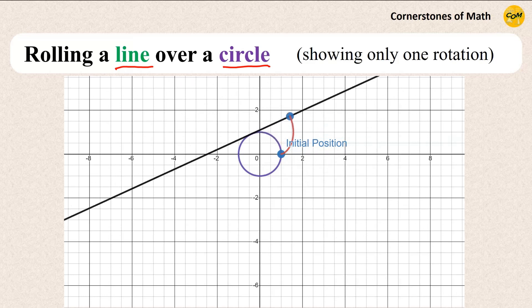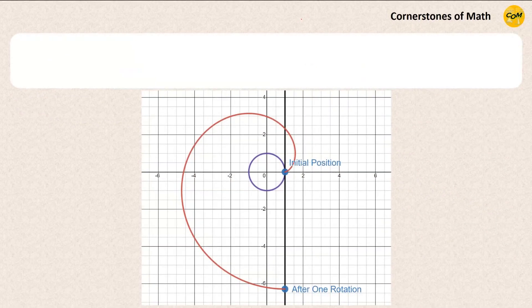And if this point leaves a trace as it moves, it will generate this red curve as the line rotates around the circle, just like the previous case of generating a cycloid by rolling the circle along the line. In this setting, we want to do two important things.